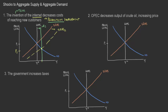When we think about this type of change, it is something we would typically consider as an increase in production prices. The aggregate supply curve represents how many goods and services would be produced by suppliers at any given price level. Since prices are increasing, we would see in the model that the short-run aggregate supply curve shifts to the left. I'll mark that as SRAS 2.